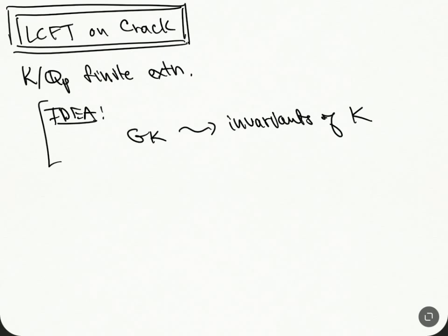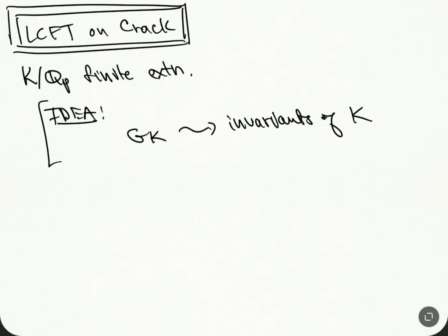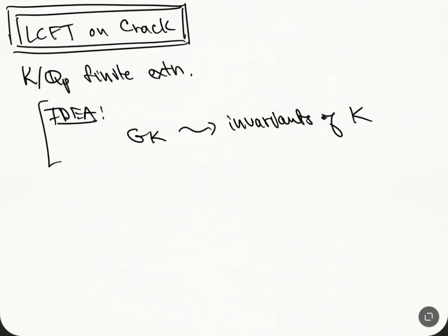We'll essentially be able to describe everything about this field K, except for the field itself. I mean, the field itself is an invariant, but we won't be able to do that. Let me just try and describe what some of these things are.